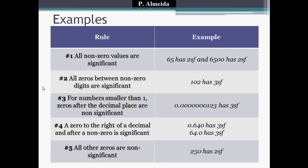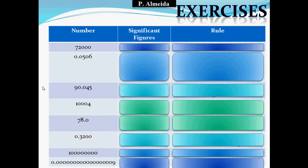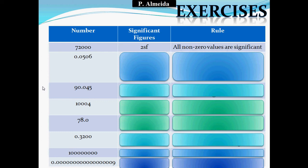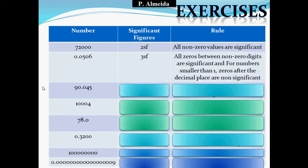Here are some exercises — pause the video if you want to try them. 72,000 has two significant figures, applying the rule that all non-zero values are significant. 0.0506 has three significant figures: the rule that all zeros between non-zero digits are significant makes that middle zero count, and since the number is smaller than one, the first two zeros after the decimal are non-significant, but the zero between 5 and 6 is significant.